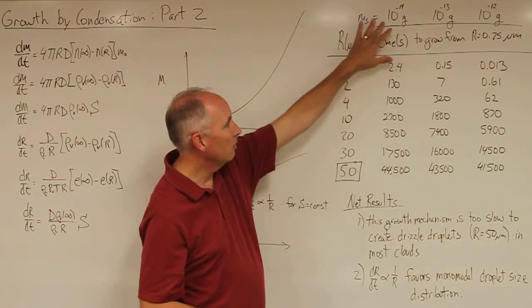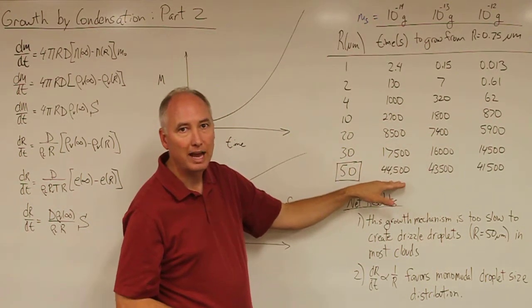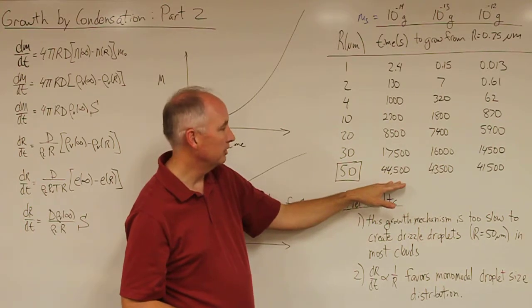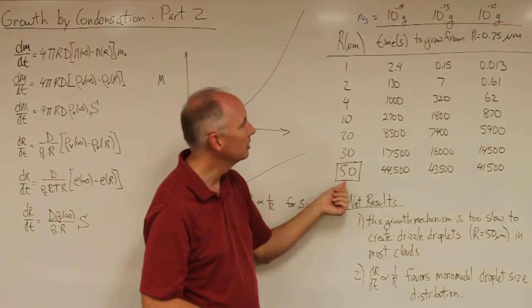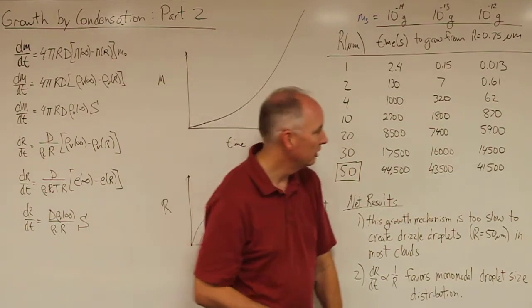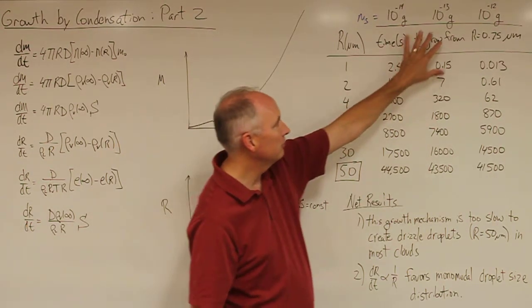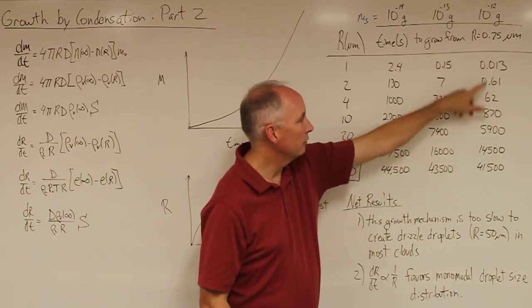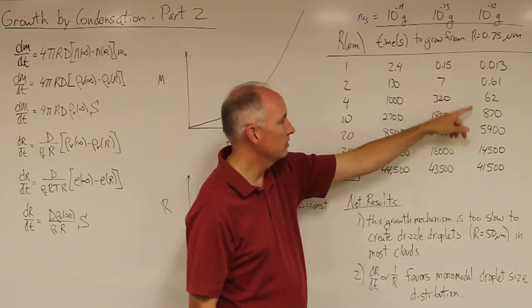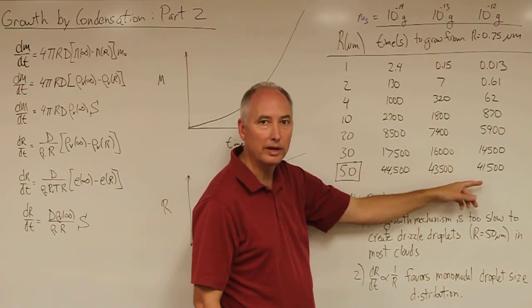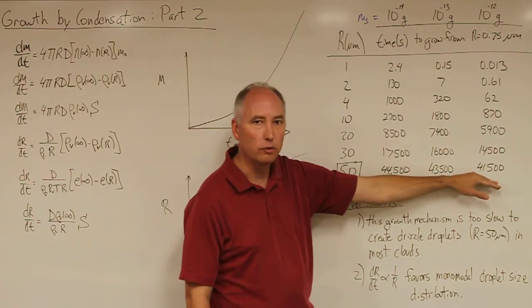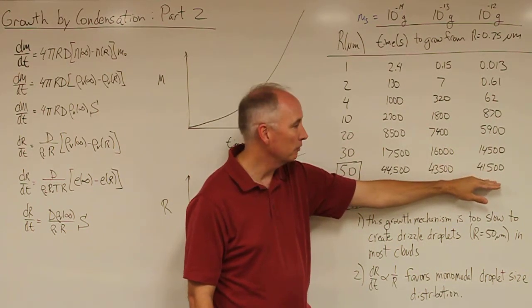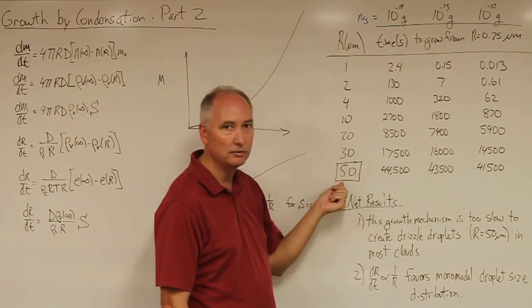So for this small particle it took more than 12 hours for it to grow by condensation up to a drizzle size droplet. And that doesn't change much even for the largest particle. It grows very quickly and then the radius takes a long time to grow even further, and still for the largest particle it still takes over 40,000 seconds in order for it to grow up to the size of drizzle droplet.